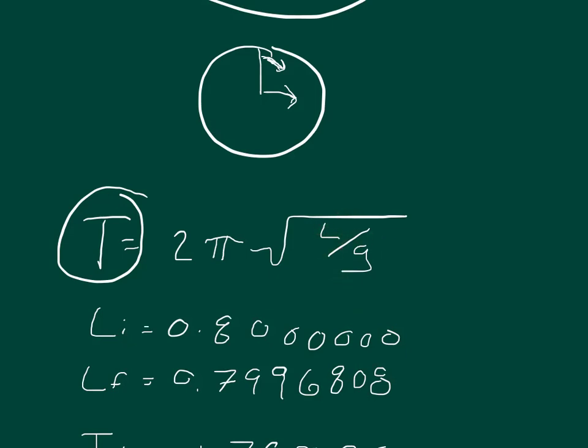And the meter, the length needs to cancel out so that we are left with our answer in seconds. And so we need to make sure that the length is given in meters so 0.8 is the initial length and 0.7996808 is the final length. And so which one is going to, how is that going to affect the time?